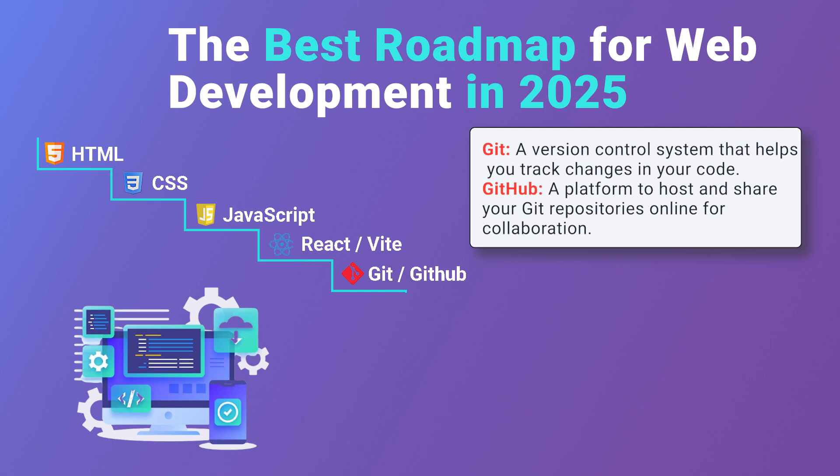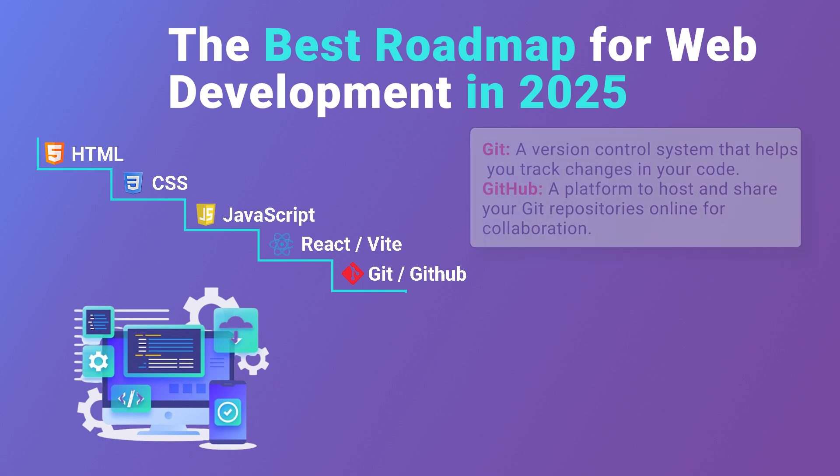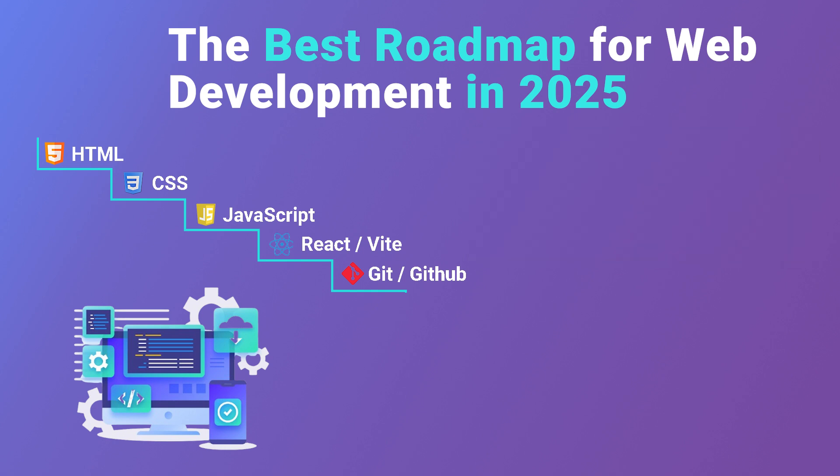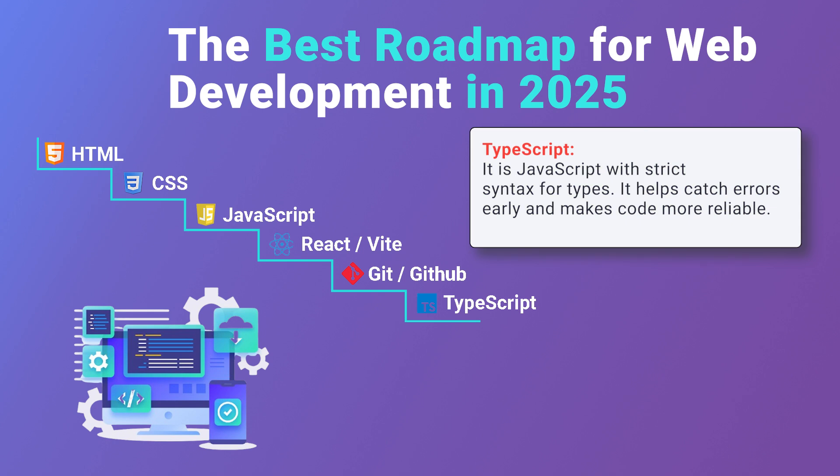GitHub is a platform to host and share your Git repositories online for collaboration. The third step, you have to learn TypeScript. It is JavaScript with strict syntax for types. It helps catch errors early and makes code more reliable.